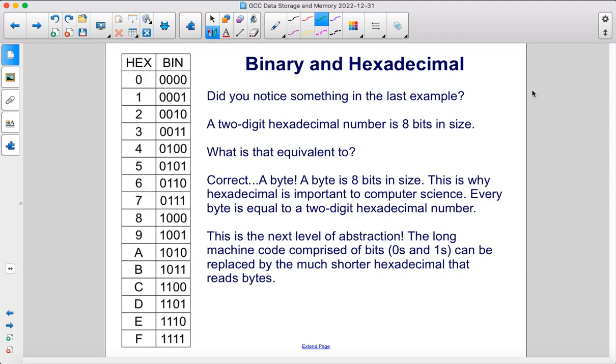Did you notice something in the last example? A two-digit hexadecimal number is 8 bits in size. What is that equivalent to? Correct. A byte. A byte is 8 bits in size. This is why hexadecimal is important to computer science. Every byte is equal to a two-digit hexadecimal number. This is the next level of abstraction. The long machine code comprised of bits can be replaced by the much shorter hexadecimal that reads bytes.